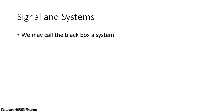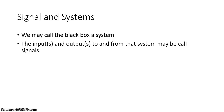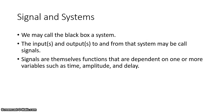Now, how do we take the black box concept and move it over to signals and systems? The black box itself is the actual system, and the inputs and outputs to and from that system we can call signals. Those signals themselves are functions, and those functions are dependent on one or more variables such as time, amplitude, and/or delay.